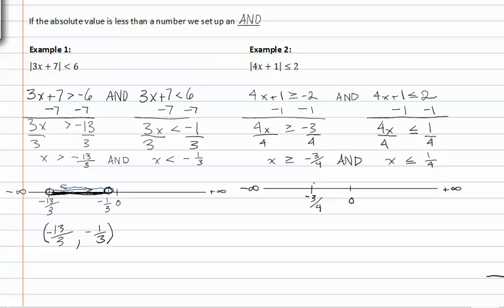Since it's greater than or equal to negative three-fourths, we have a closed dot heading to the right. At x less than or equal to one-fourth, we place a closed dot at positive one-fourth, and this piece is heading to the left. The interval in which this and inequality statement is true is from negative three-fourths to one-fourth, so the interval notation is a bracket negative three-fourths comma one-fourth bracket.